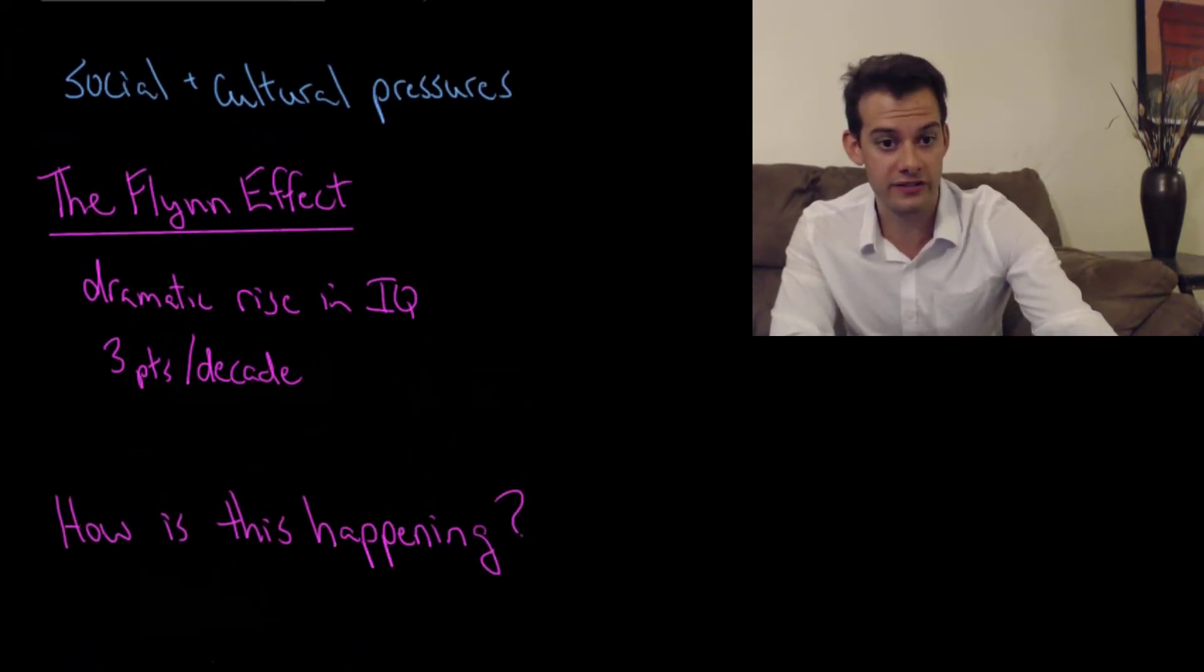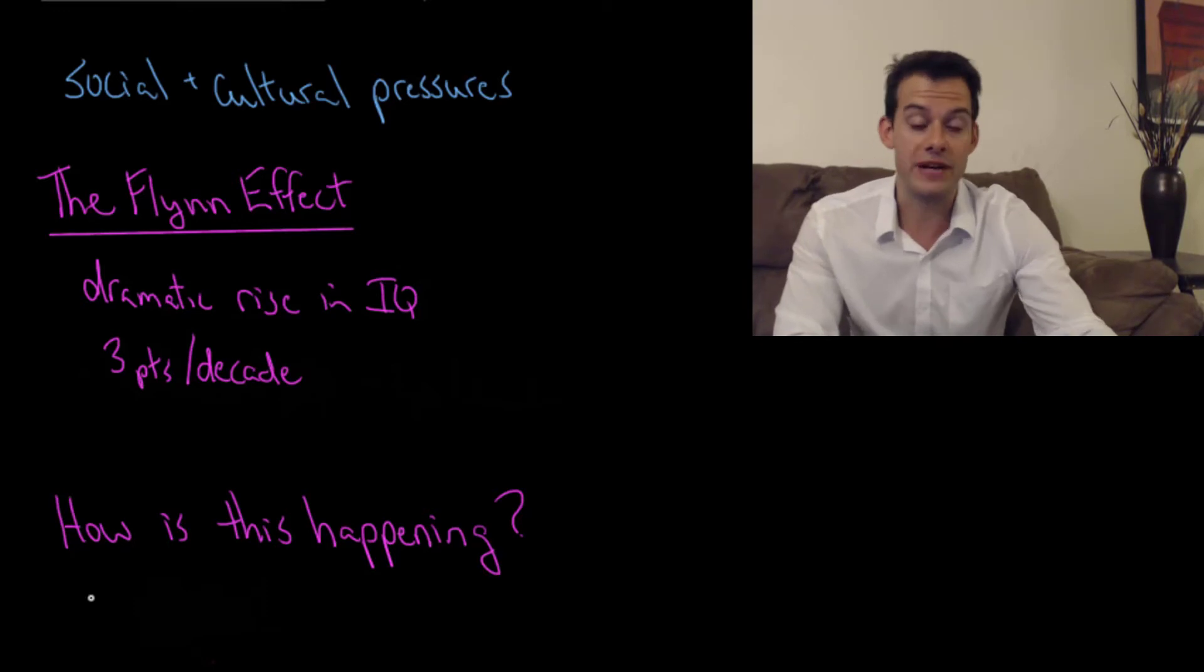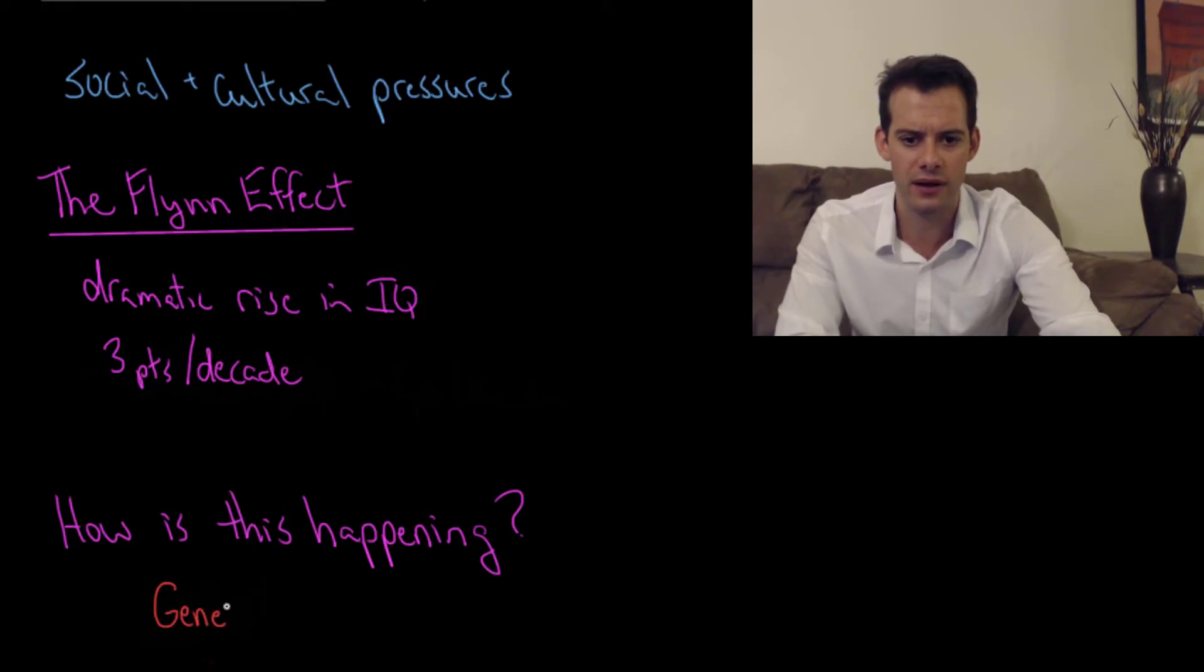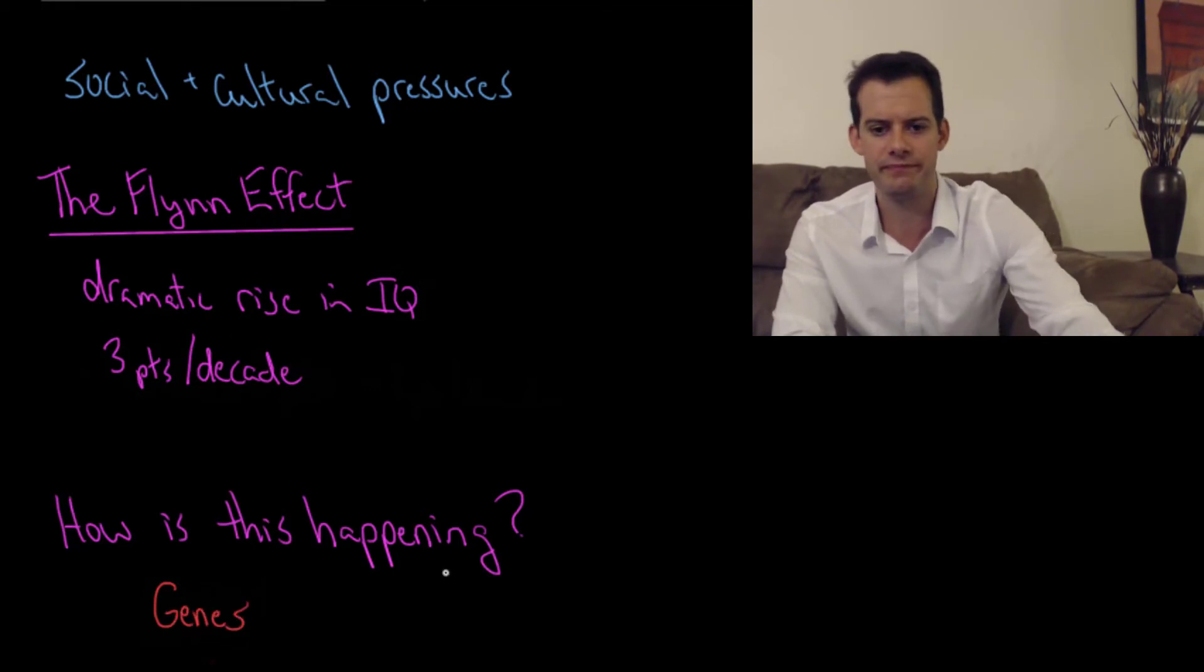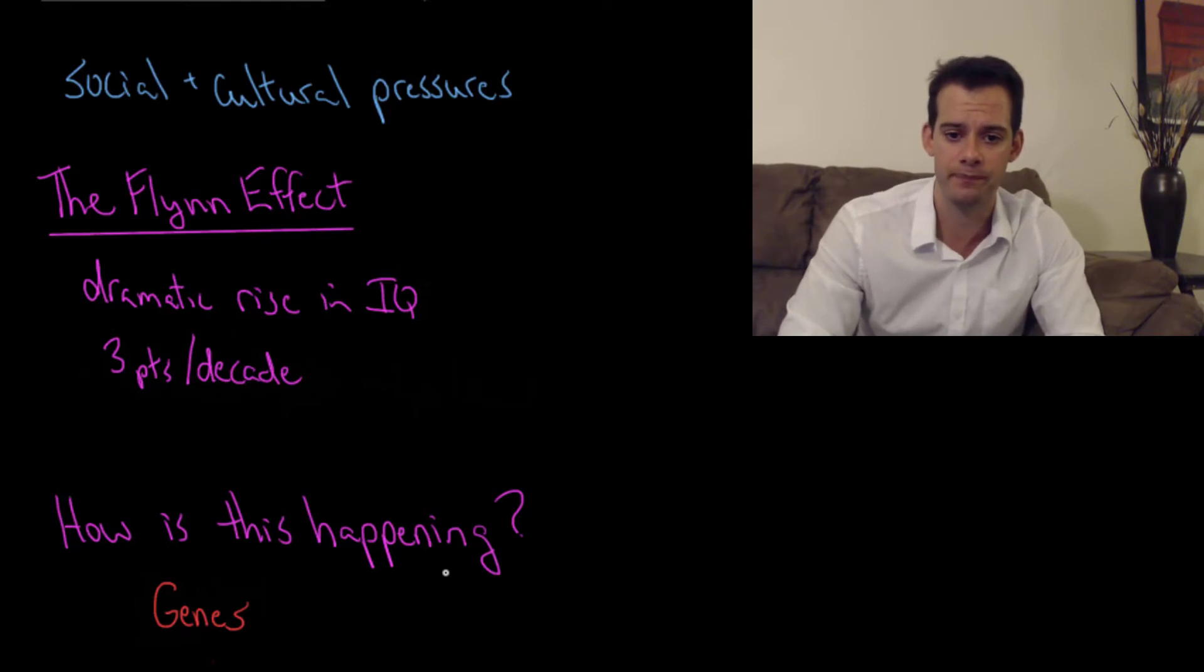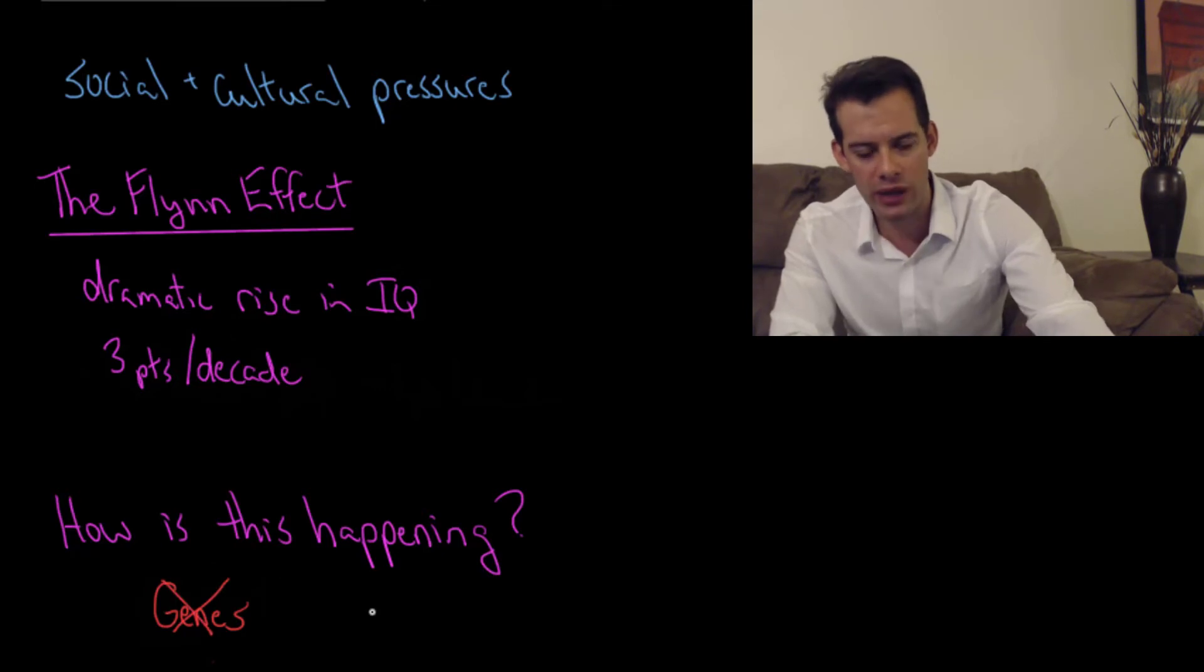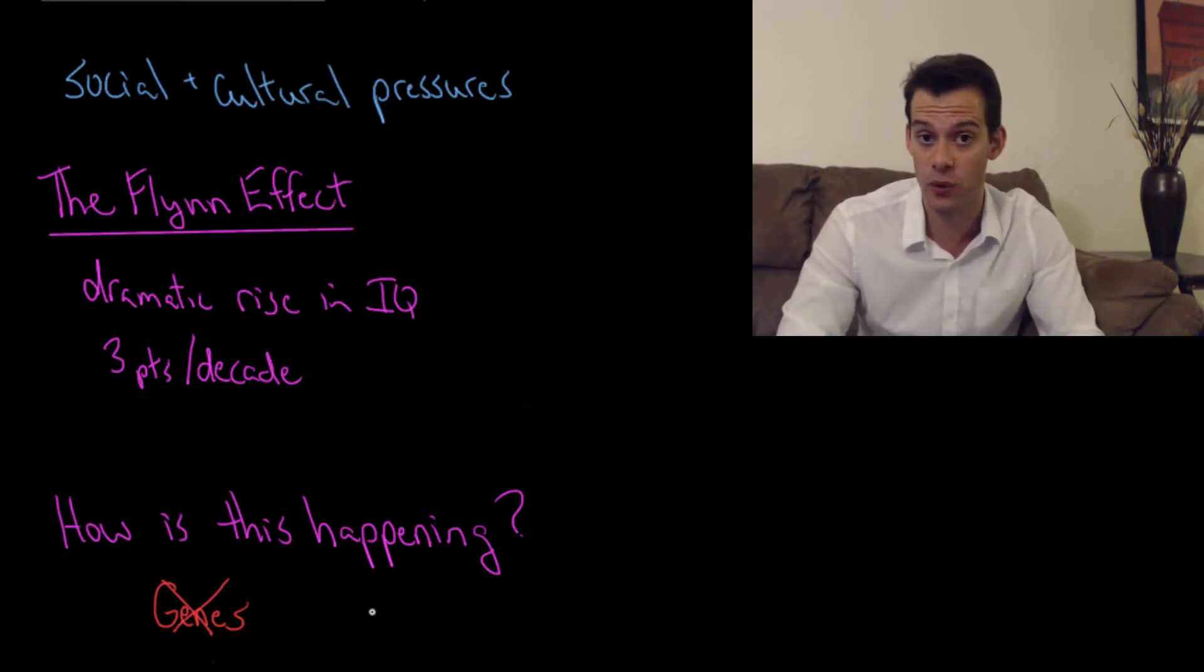One thing we could consider is that maybe there's natural selection occurring. There's some sort of advantage for higher IQ and it's being selected for and that's causing us to have this increase in IQ over time. That would be a sort of genetic explanation. But when we look at this we realize that doesn't make any sense because it's happening far too quickly for selection to be occurring. Evolution occurs over much, much longer periods of time. It doesn't happen in a decade. So we can probably rule out that our genes are changing this quickly.